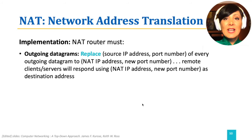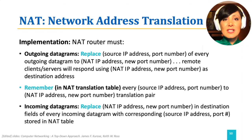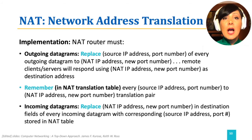The NAT translation table keeps track of the mapping of the source IP address and port number to the NAT IP address and the new port that was used. For incoming datagrams, the NAT-capable router replaces the NAT IP address and new port number in the destination fields with the corresponding source IP address and port number that was registered before, by consulting the stored entries that were written upon outgoing datagrams in the NAT table.